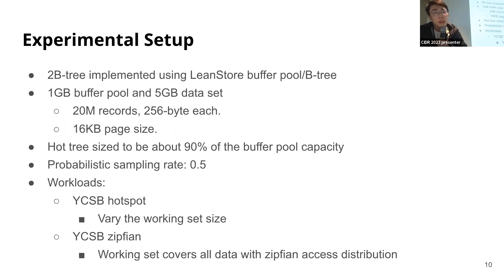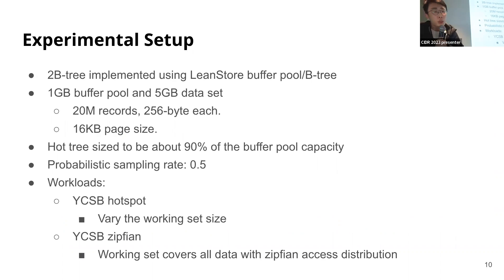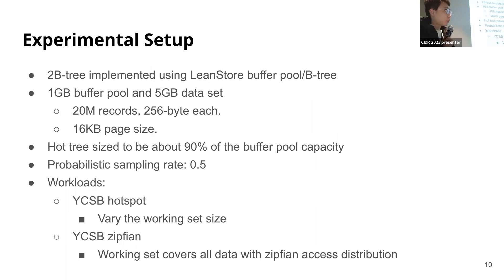We next experimentally compare 2BTree and single B-tree, both implemented using the LeanStore buffer pool and its B-tree implementation. We configured a one gigabyte buffer pool and a five gigabyte dataset containing 20 million records of 256 bytes each, and configured a 16 kilobyte page size. We sized the hot tree to be around 90% of the buffer pool capacity, leaving 10% for the cold tree. We set the probabilistic sampling rate around 50%, which works reasonably well for our experiment results.